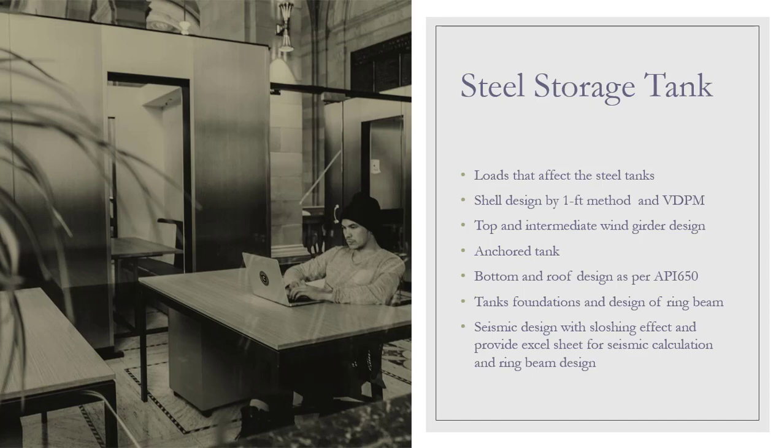For the bottom, we cover the annular plate — how to choose and design it. For the roof, we discuss the concept of roof design and the method of calculating the suitable roof configuration to comply with API 650. Then we go through tank foundation design. A major subject is wind load and seismic design, which has a special nature for tanks because the tank contains liquid — according to seismic analysis, the liquid moves inside the tank causing a sloshing effect.